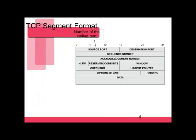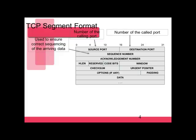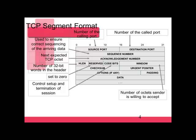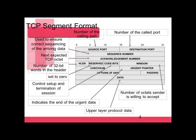Looking at a TCP packet, it's a lot larger than a UDP packet. The key fields to know inside a TCP packet are the source port and destination port, sequence numbers, acknowledgement numbers, and the window size, along with the actual data. There's a lot of overhead with this packet, and the reason is to ensure the message is delivered reliably and can be reassembled in the correct order.